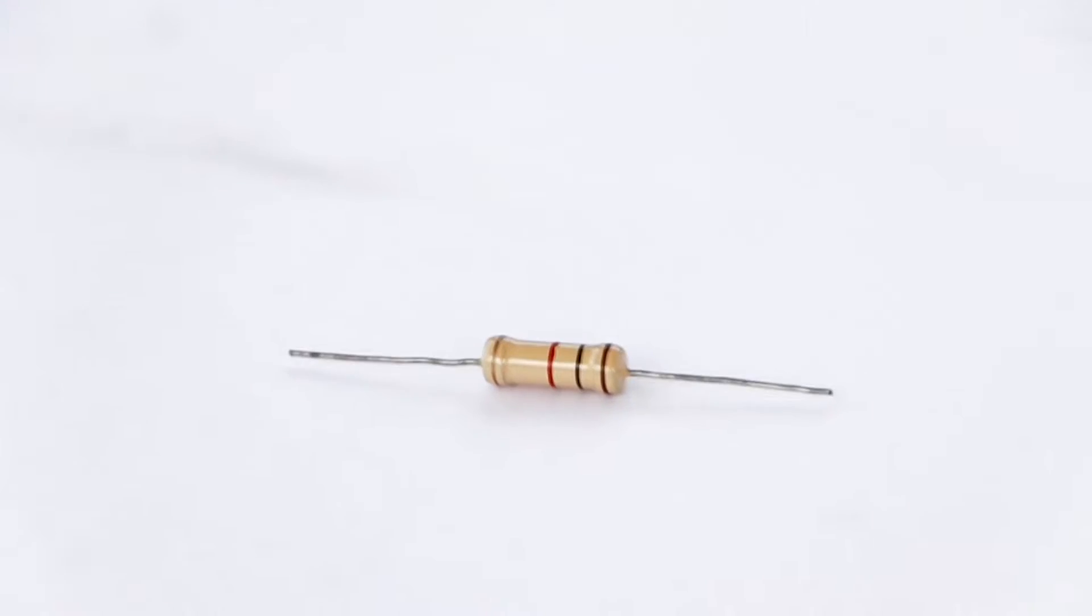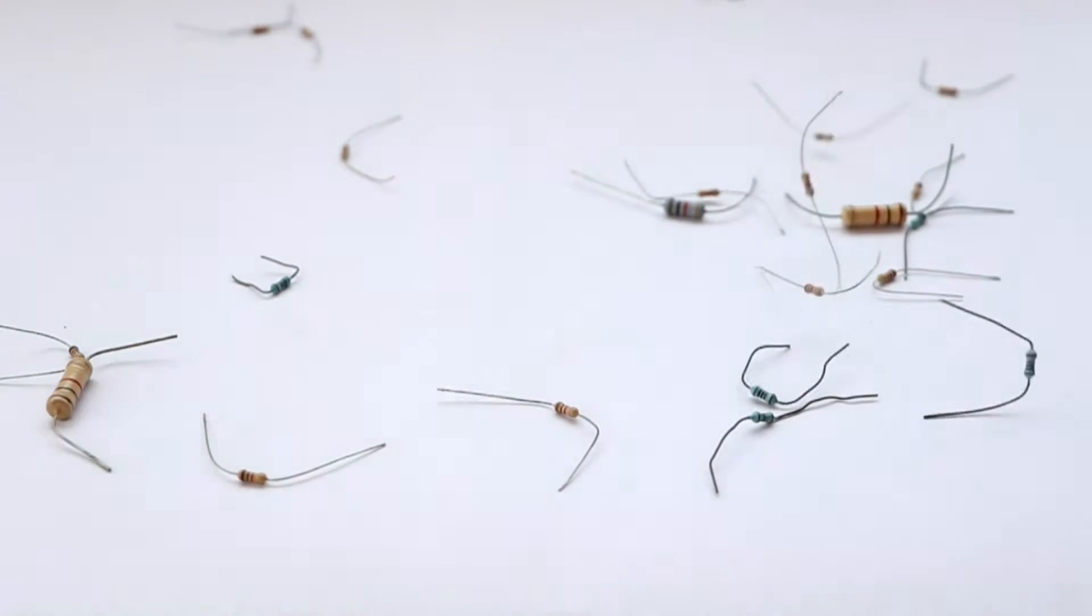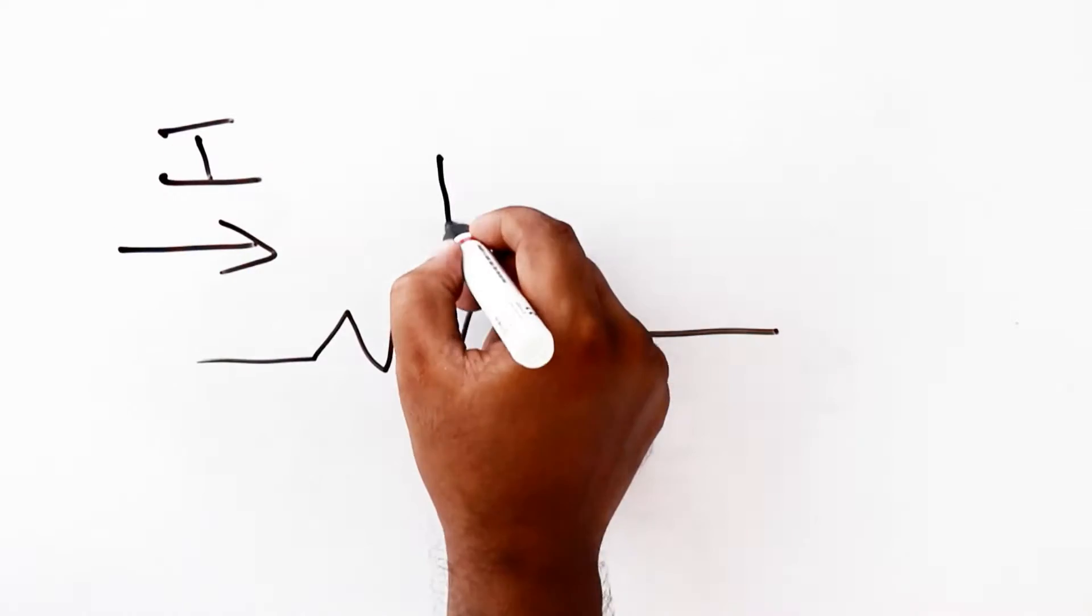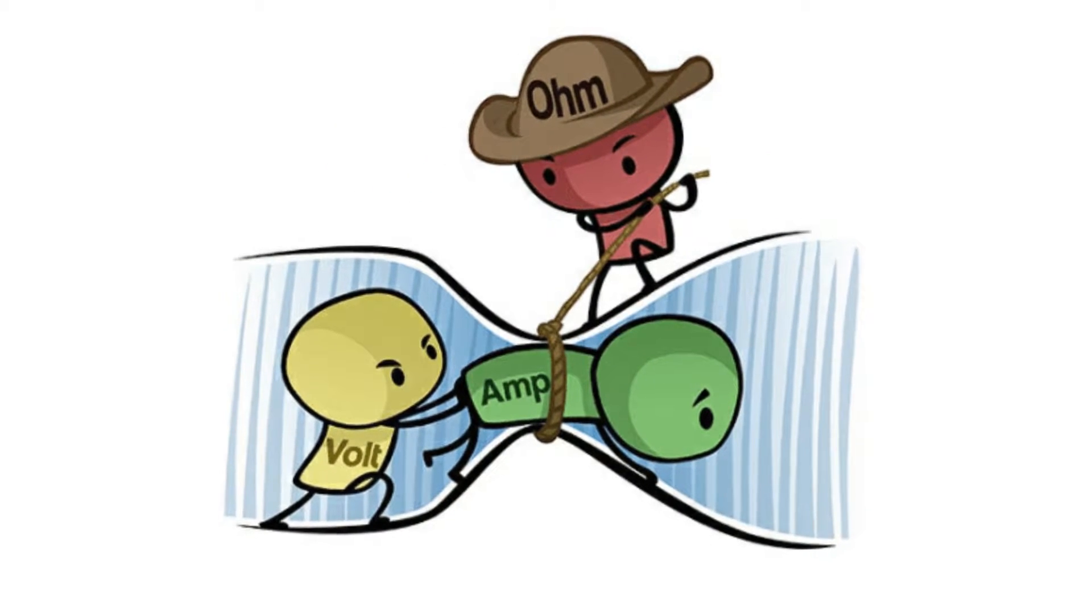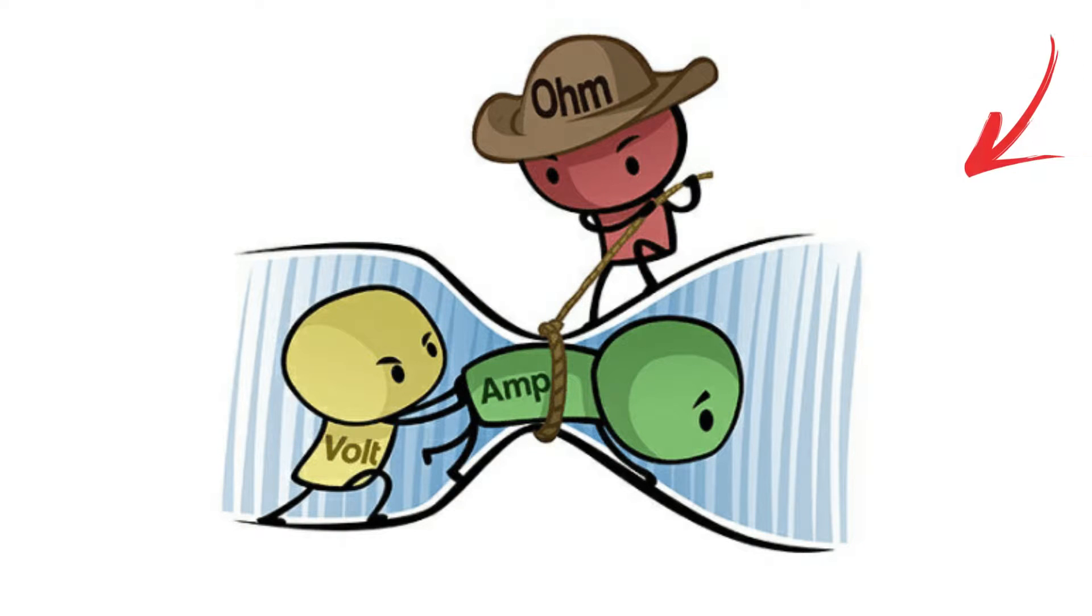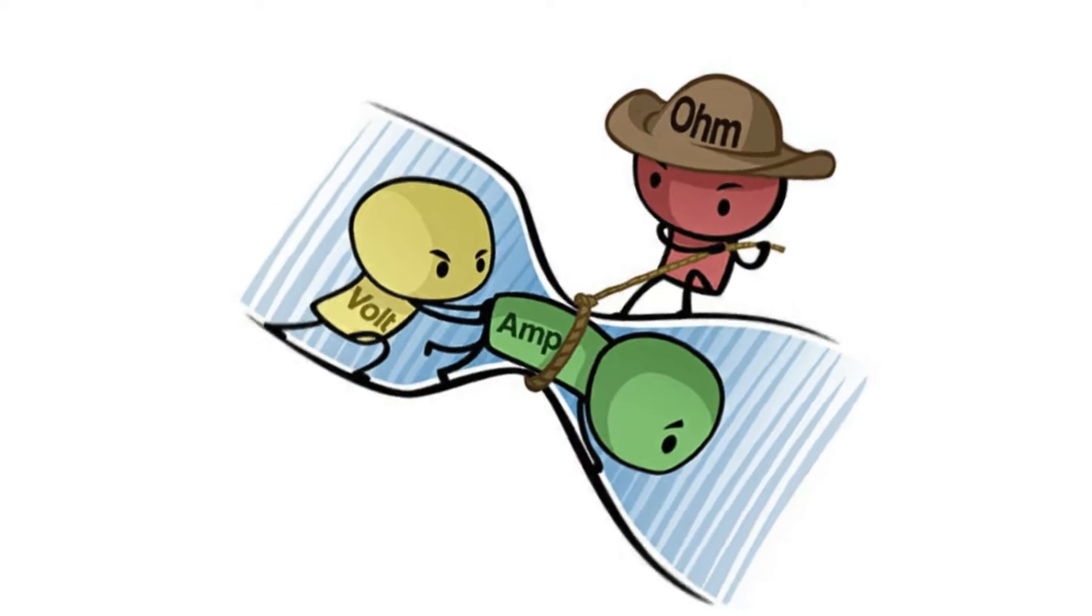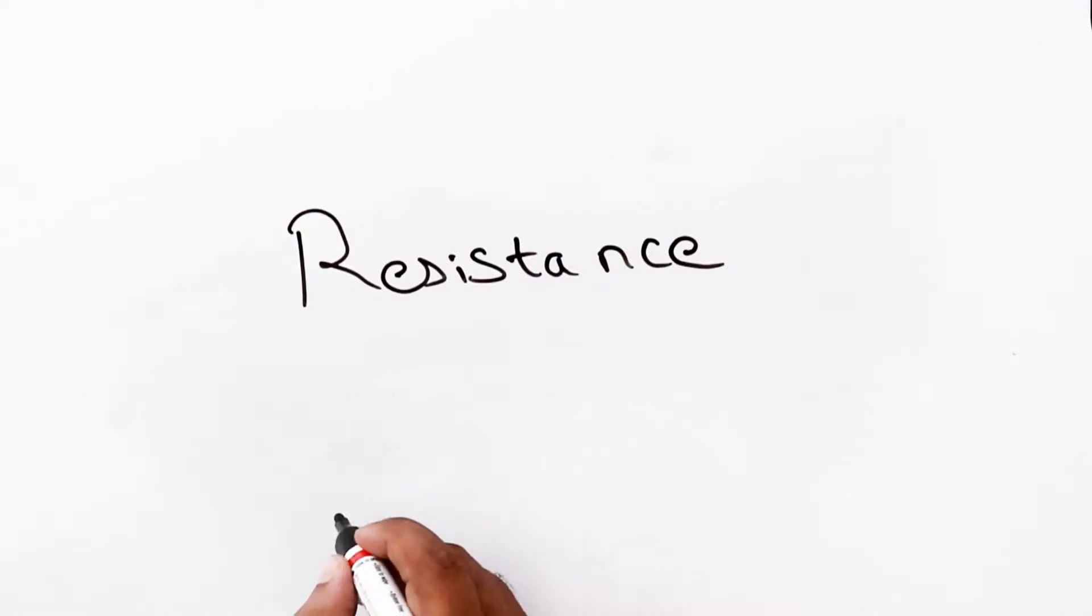What is a resistor? It is a passive component which means they cannot generate energy on their own. It exhibits resistance to the current flowing through it. You must have seen this popular graphical representation of how resistance works and relates with current and voltage. Here, resistance is the guy who tries to control the flow of current by resisting it. This property of resistor is called resistance and every resistor will have some resistance value and it is measured in Ohms.